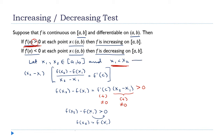So f(x2) minus f(x1) is greater than zero, which means f(x2) is greater than f(x1). But that's exactly what it means to be increasing — our definition says if x2 is greater than x1, then f(x2) is greater than f(x1). That's the increasing case. I'll let you try the decreasing case on your own.